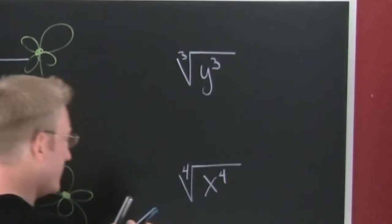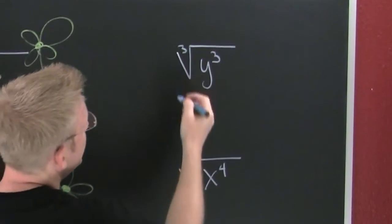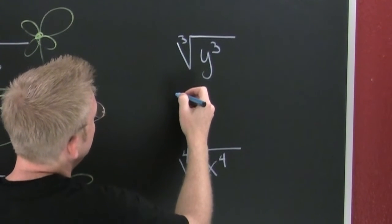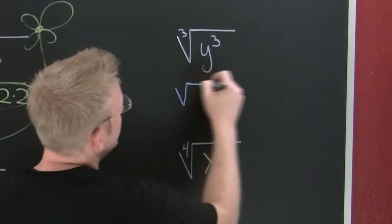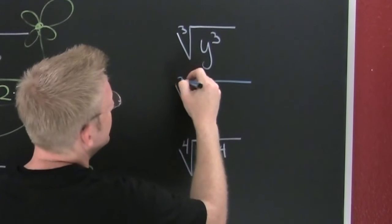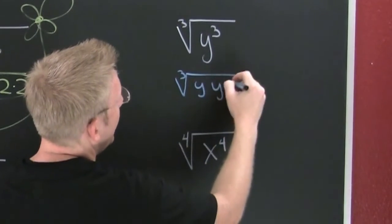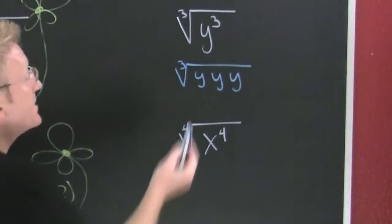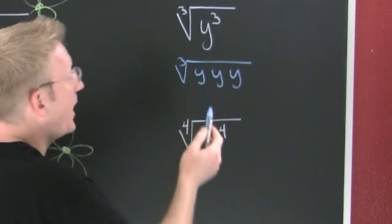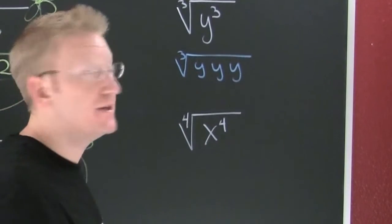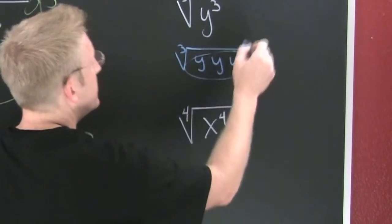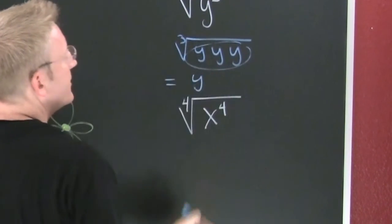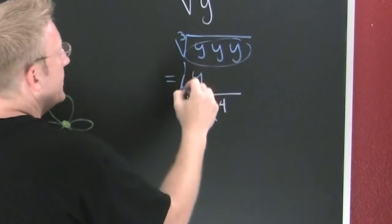Here we have the cube root of y cubed. That's the third root of y times y times y, because y to the third power means three copies of y. For every triple, one gets to come out. The cube root of y cubed is simply y.